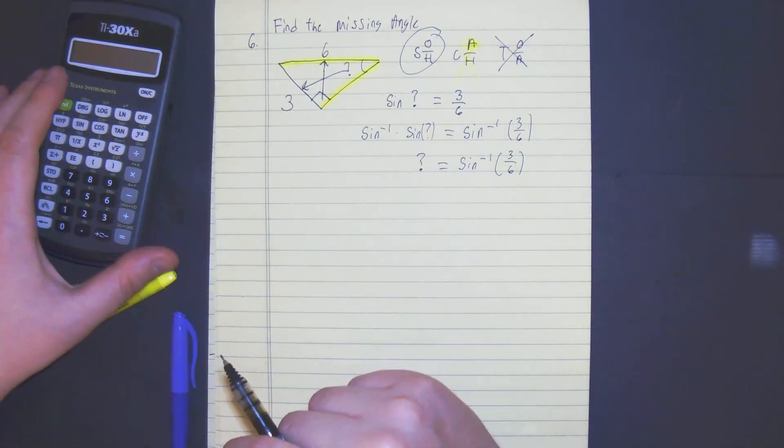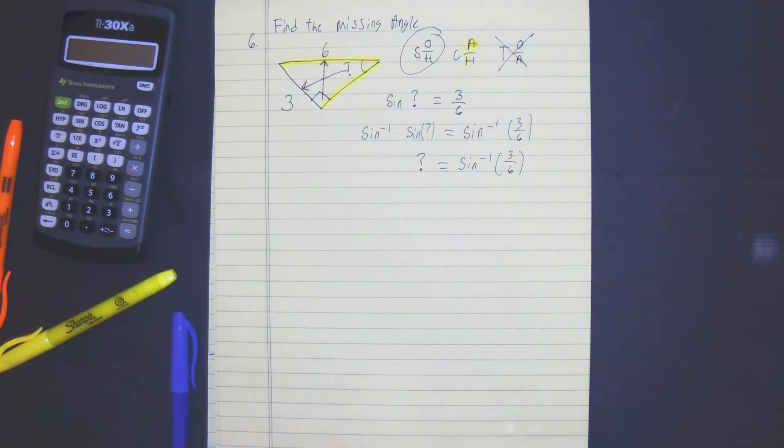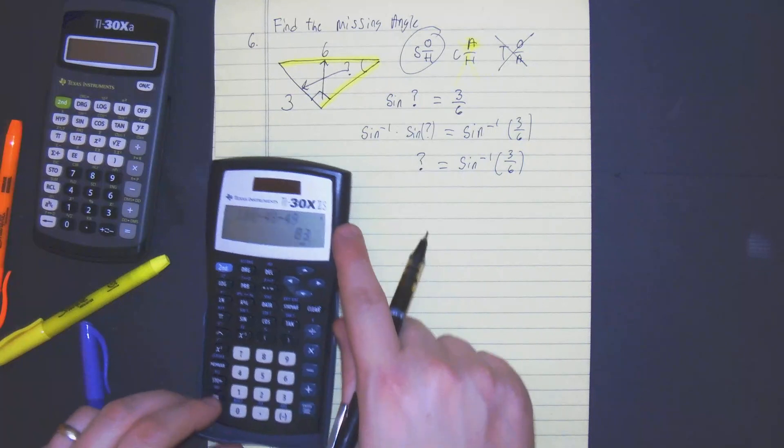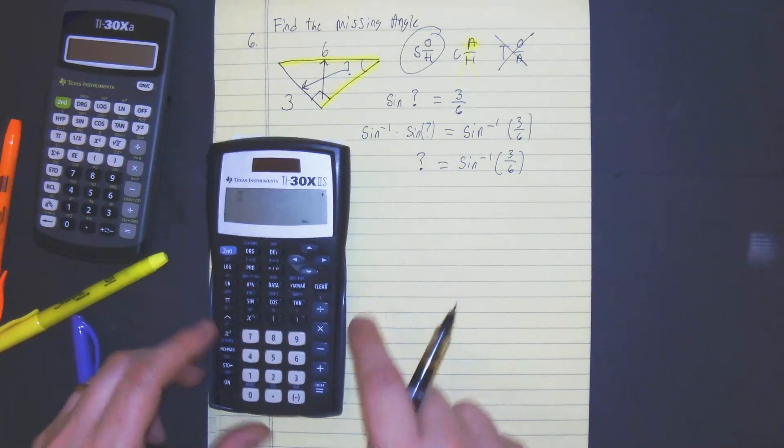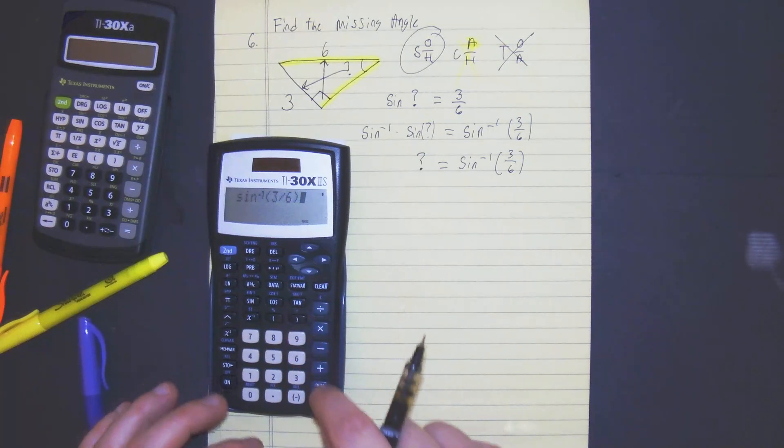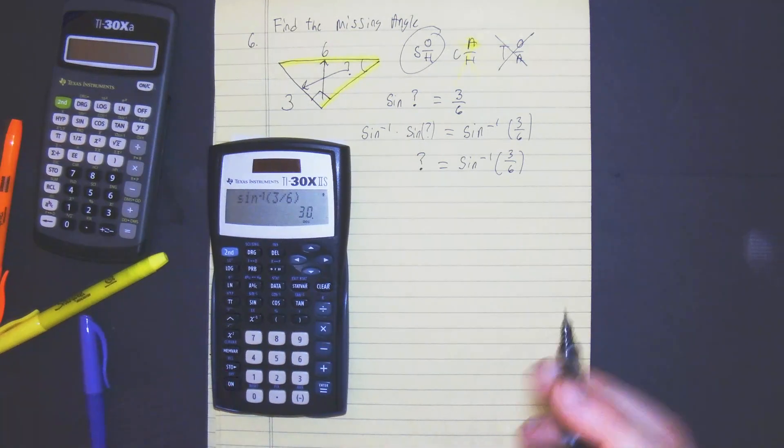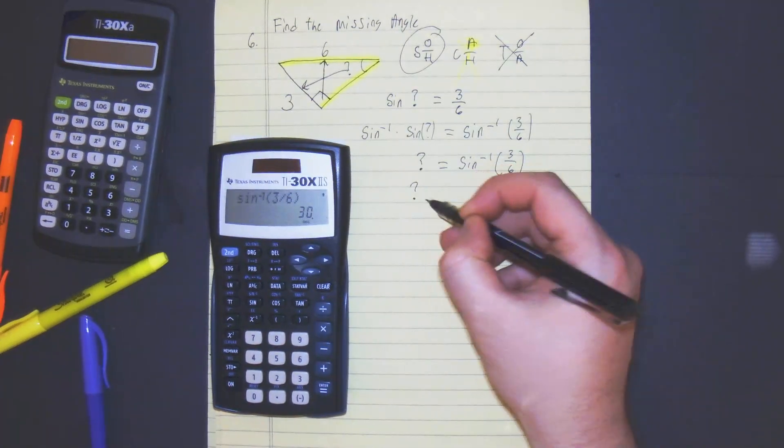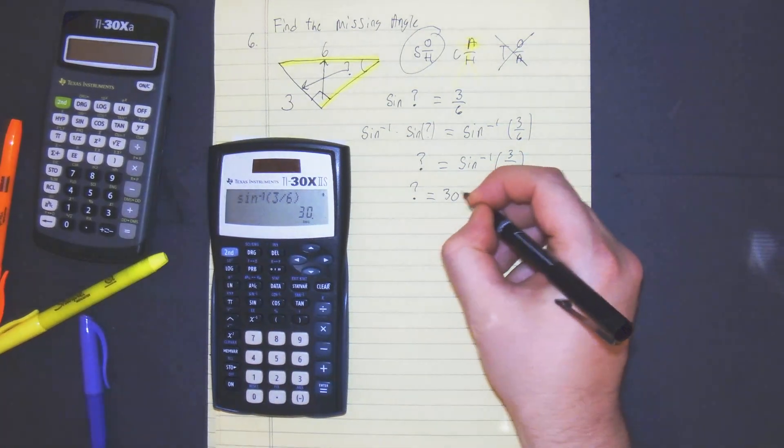And in your calculator, let me get this one so we have one that you didn't see like your scientific one. So you just have to do second sine, three divided by six. You get the question mark is equal to thirty degrees.